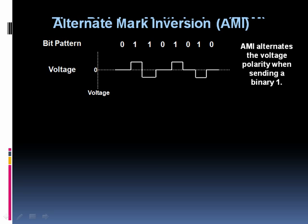The way we get an average of 0 volts is: when we send one binary 1, it's a positive voltage, and when we send the next binary 1, it's a negative voltage. We alternate back and forth — positive, negative, positive, negative. This approach is called AMI, alternate mark inversion. But there's an issue with alternate mark inversion — in its native raw form, AMI's got a big issue.